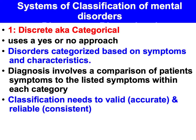The discrete approach takes a yes or no approach. That is, based on the symptoms identified, you either have schizophrenia or you don't. The disorders are categorised based on the symptoms identified and their characteristics. Diagnosis involves a comparison of patients' symptoms to the listed symptoms in, for example, the DSM.